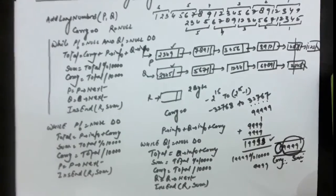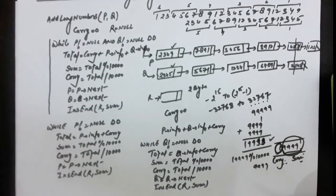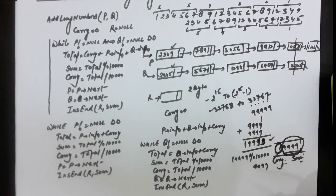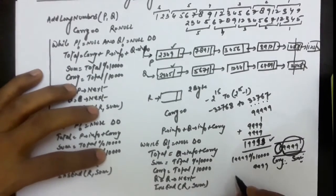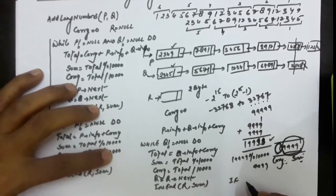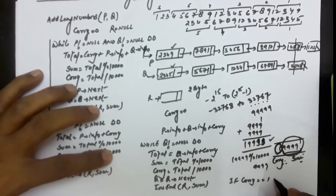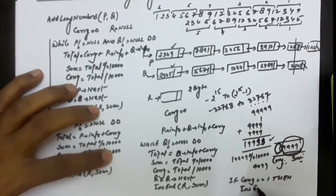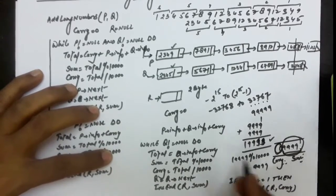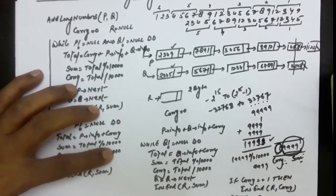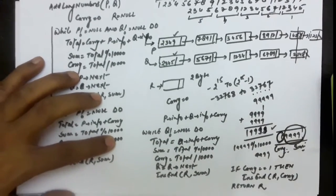There is one more thing to handle. After the addition of the last two nodes, a carry might be generated. If that carry is not stored as a linked list node, the answer would be wrong. So if carry equals 1, you need to insert that carry as the last node in the linked list. After all these operations are performed, return the linked list R which contains the answer.